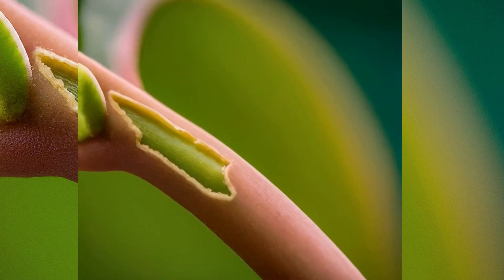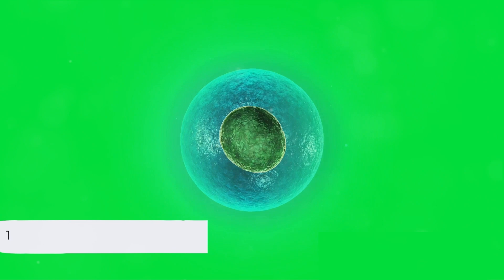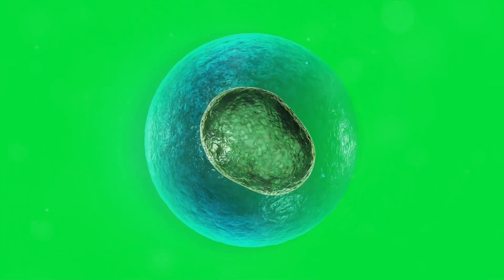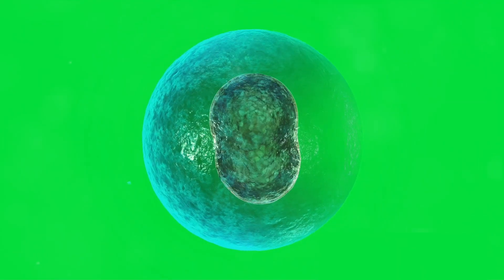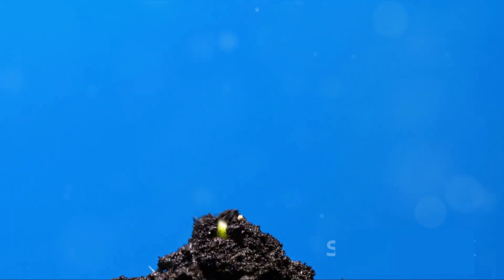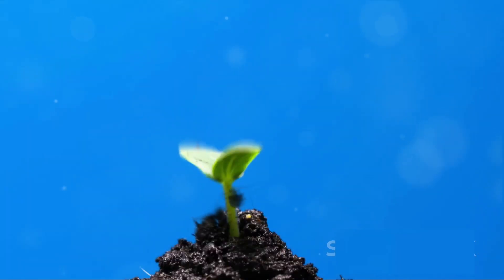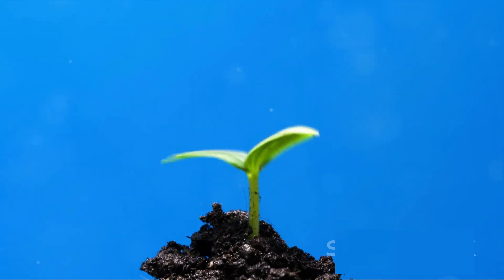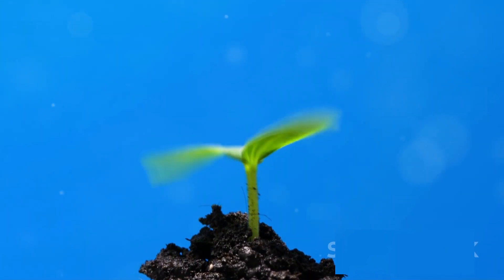To sum it all up, the intercalary meristem, located between the nodes of the stem and the leaf base, is an essential part of plant growth. It's a hub for cell division, contributes to the elongation of stems and formation of branches, and plays a key role in plant regeneration.